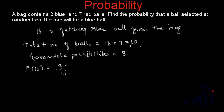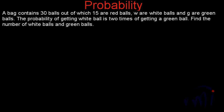This is a very simple, straightforward question. The probability of getting a blue ball in this case is 3 out of 10, because there are 3 balls out of 10 which are blue. Now let me note down the second question.